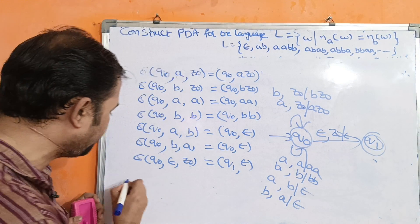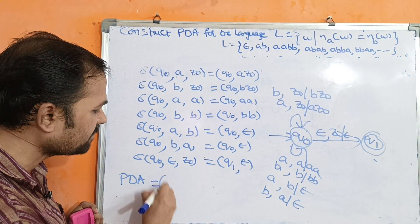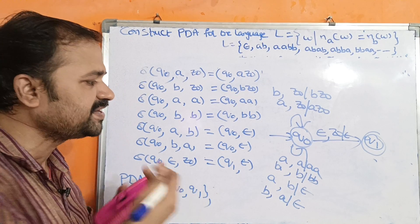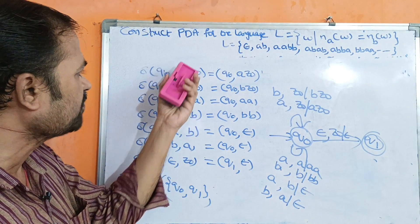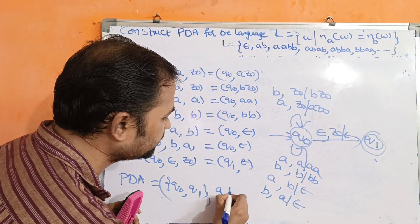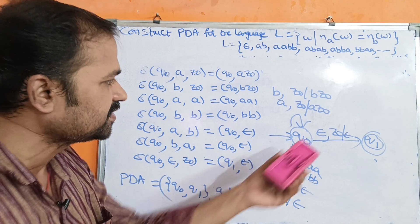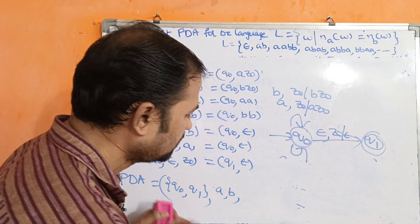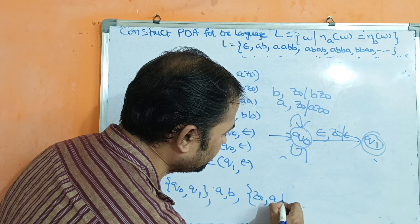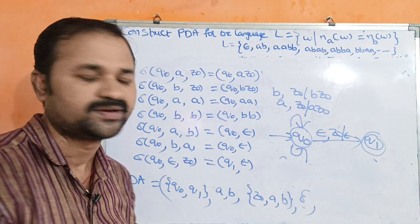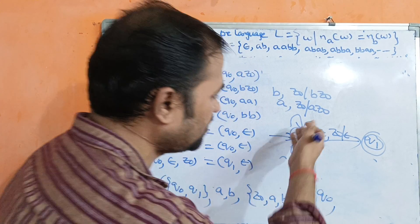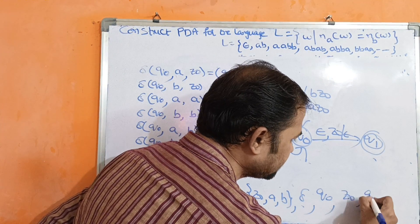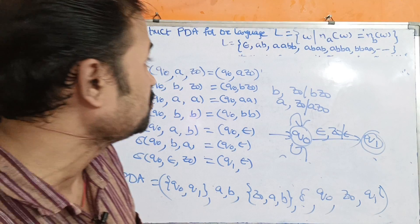Now let us write the formal PDA. M = (Q, Σ, Γ, δ, Q0, Z0, F). Q is the set of states: {Q0, Q1}. Σ is the input alphabet: {A, B}. Γ is the stack alphabet: {Z0, A, B}. δ is the transition function already written. Q0 is the starting state. Z0 is the starting symbol of the stack. The final state is Q1. This is the complete pushdown automata for this problem.